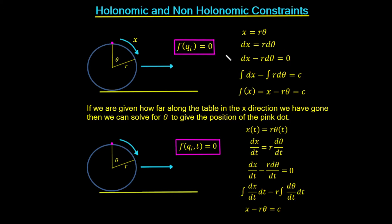This is our equation of constraint, and we can integrate it: integrating dx and r·dθ gives x − r·θ = c, where c is just the constant of integration. The value of c is simply the initial starting point for the dot — we can define the initial condition such that c = 0. Alternatively, you can think of c as an initial displacement or a phase angle.